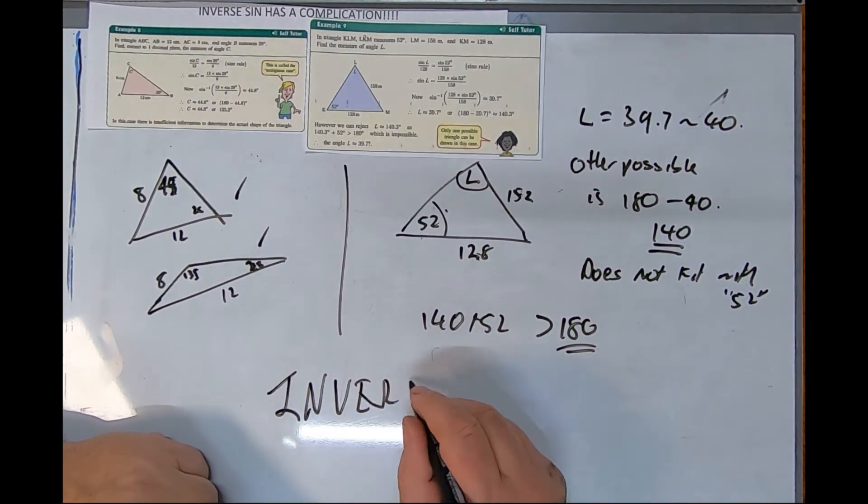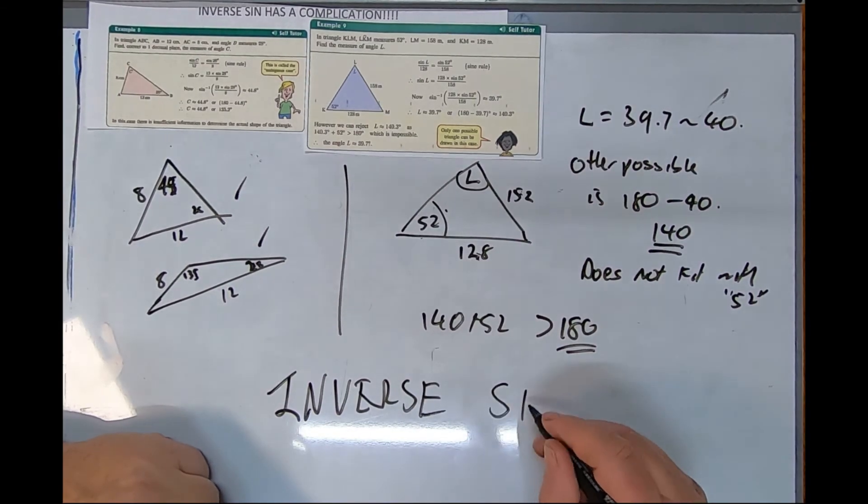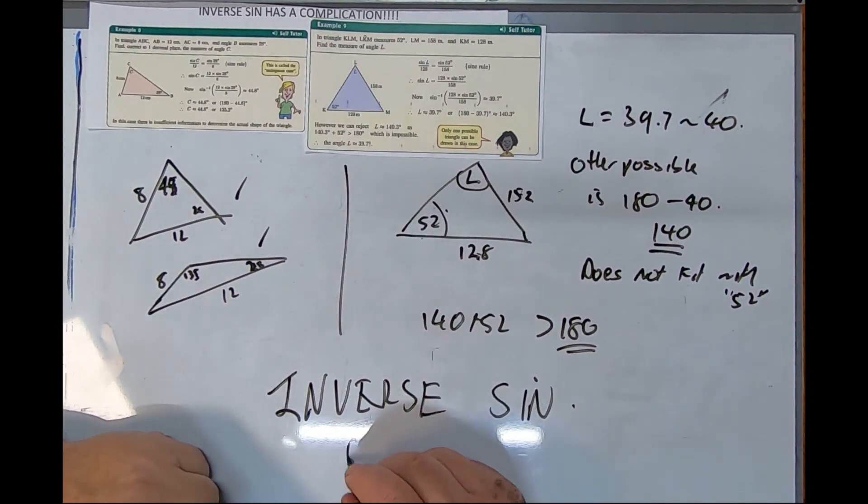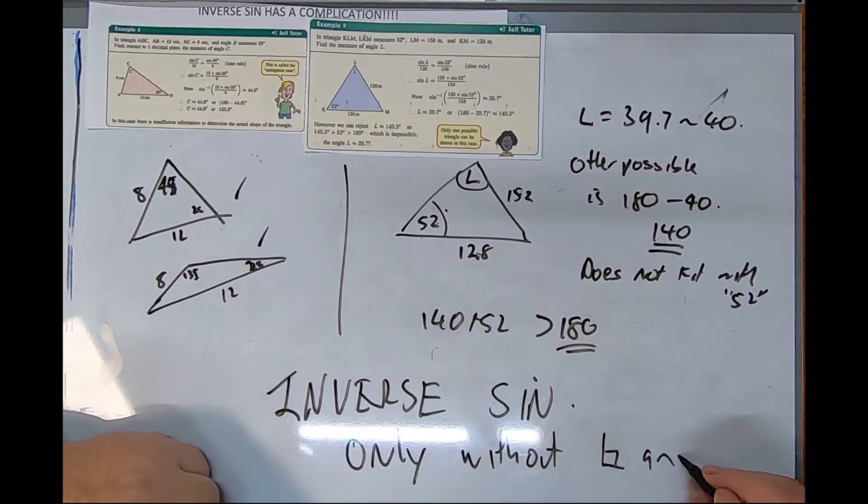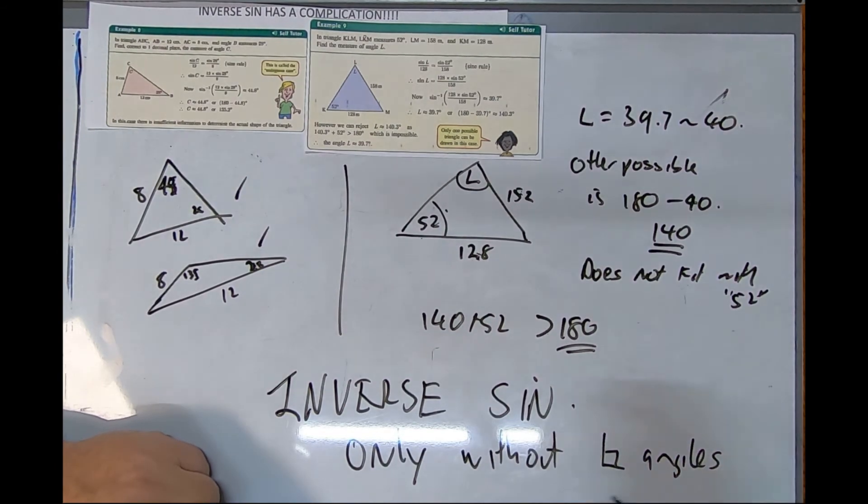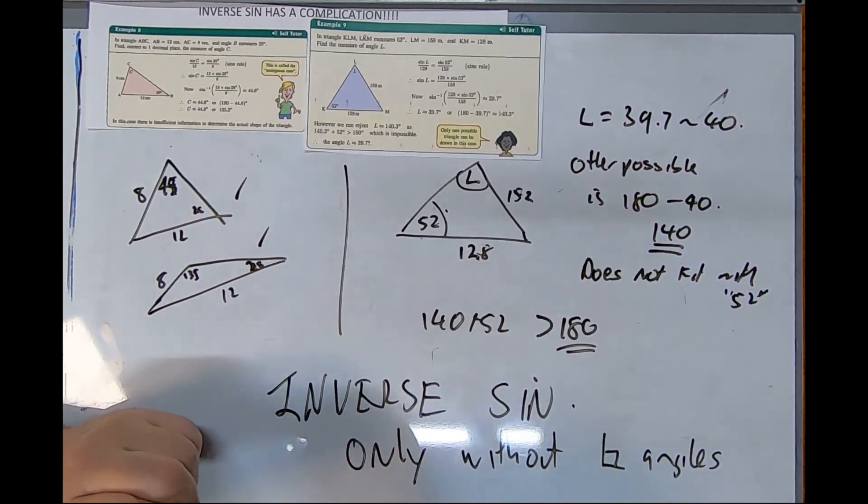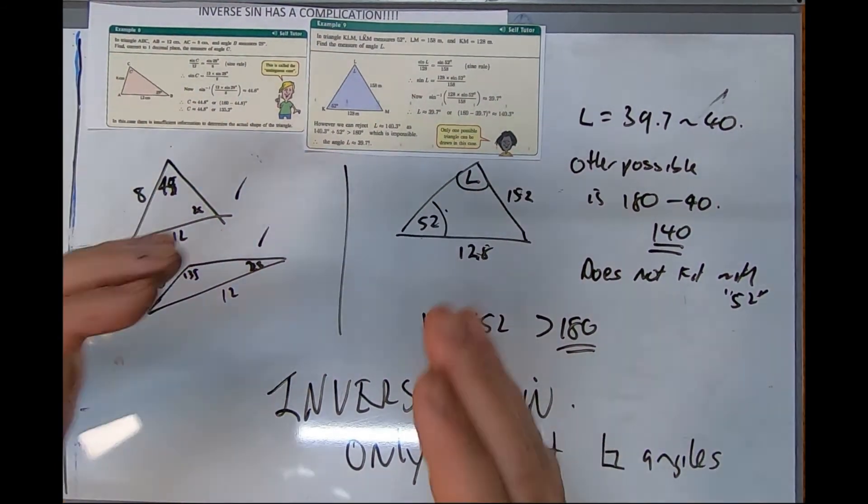Now we'll do a couple of these and see how we go. Only have to worry about this for inverse sine. Inverse cosine has this all sorted out. You'll never see a problem with inverse cosine, only with inverse sine, only without right angles. With a 90 degree angle, it's simply the smaller number.